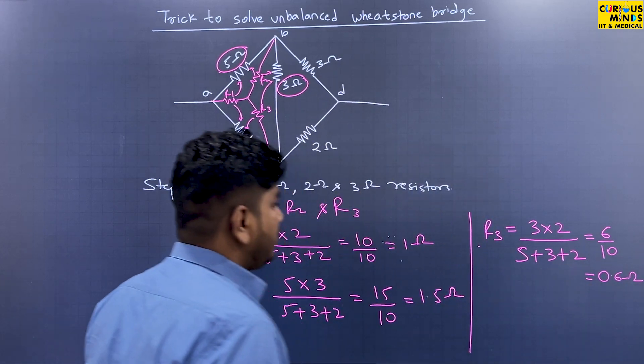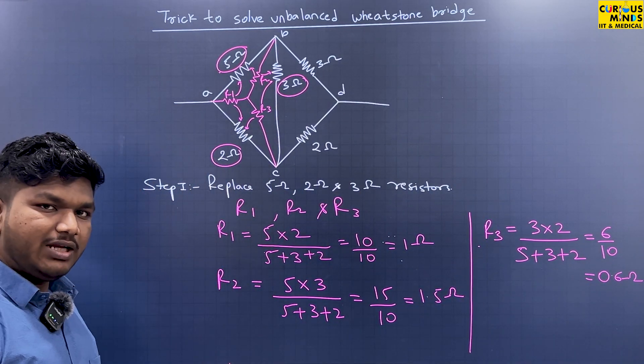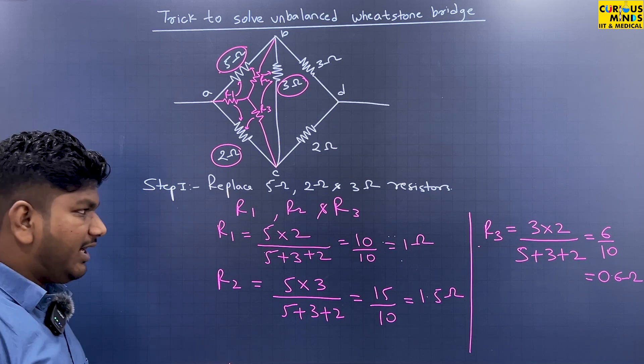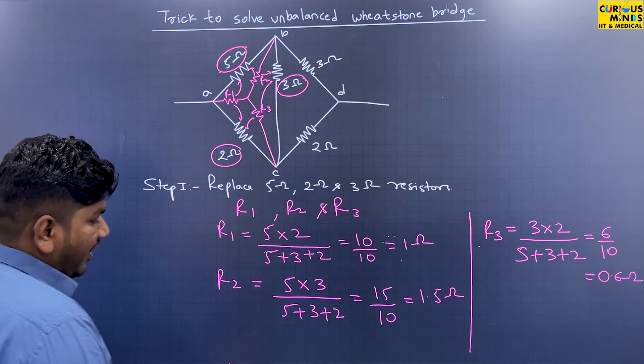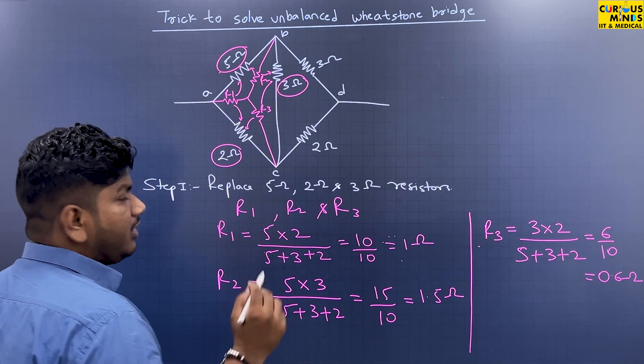So as you can see, we've calculated R1, R2, and R3. We replaced the 5, 3, 2 resistances with R1, R2, R3.